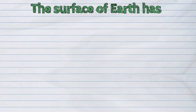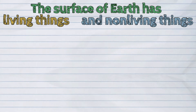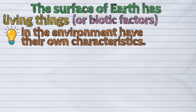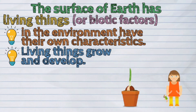The surface of the Earth has living things and non-living things. Living things, or biotic factors in the environment, have their own characteristics. For one, living things grow and develop.